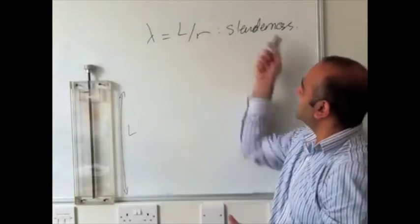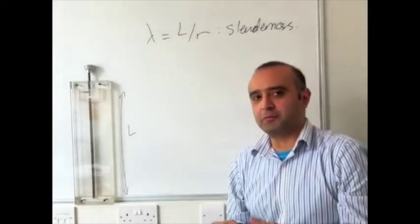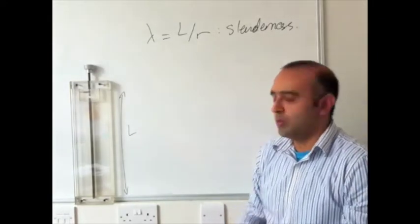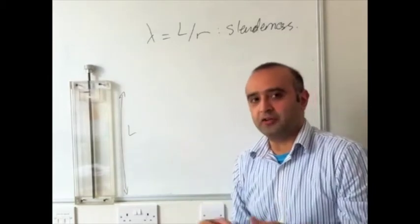So having defined the slenderness of our column, what we're really interested in is the force that it can take before it buckles. This column here is of length L, and we can actually relate that to the actual force that we have in our column.